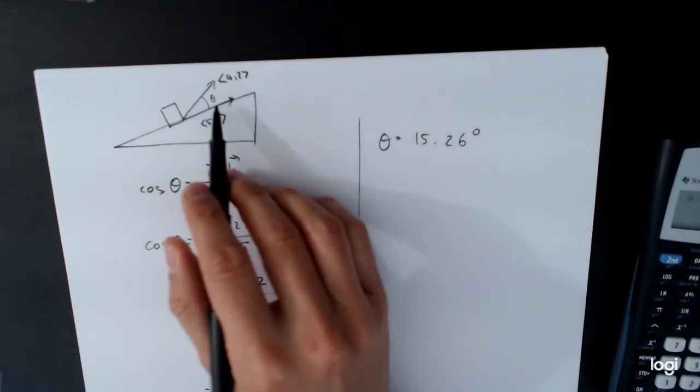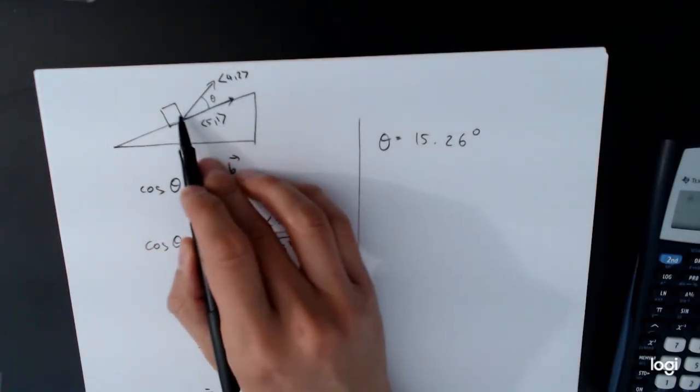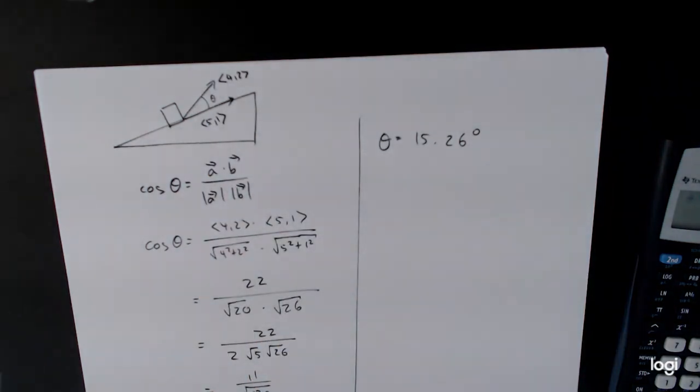So this says that the angle between the ramp and where we're pulling is 15.26 degrees.